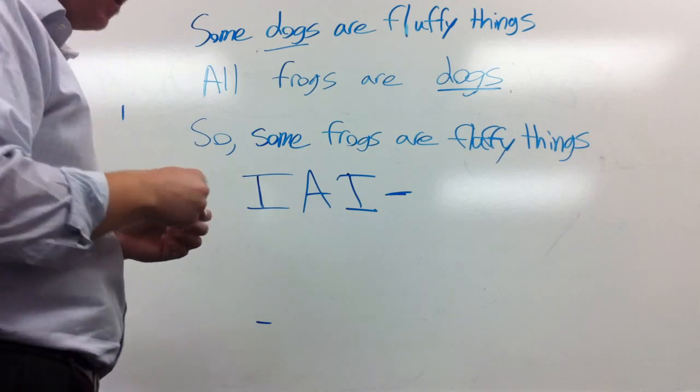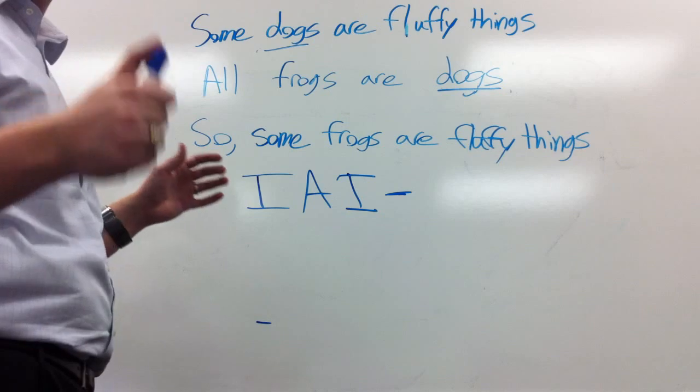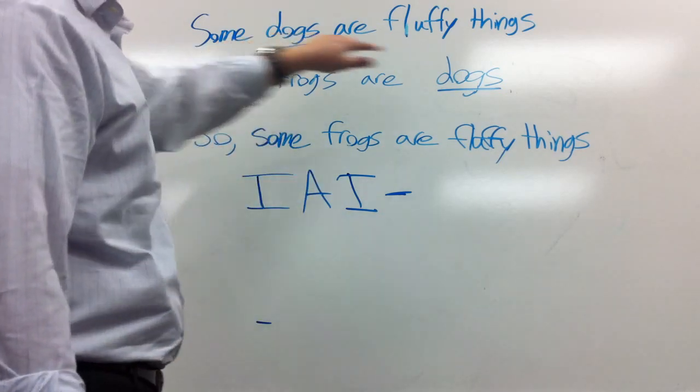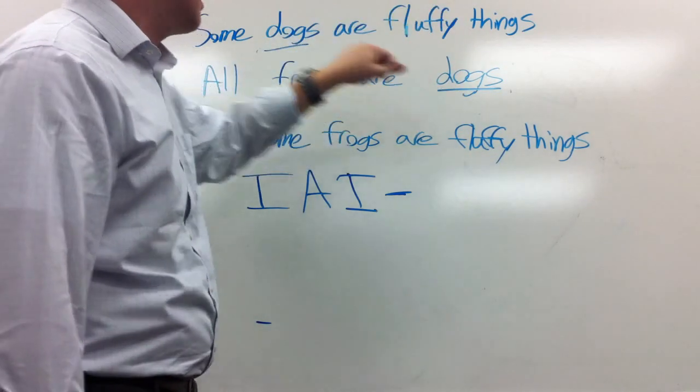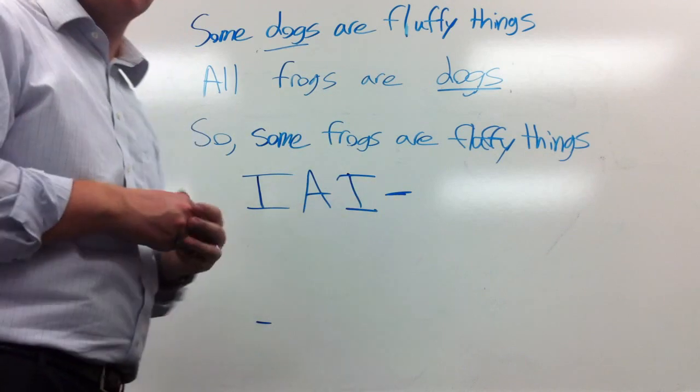Now to determine the figure, it's all about the relationship of where the middle term actually applies. There's only four different combinations. The middle term could be here and here, they could both be over here, they could both be over here, or they could be over here. That's the only combinations.